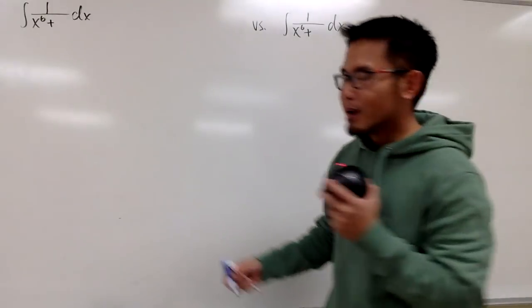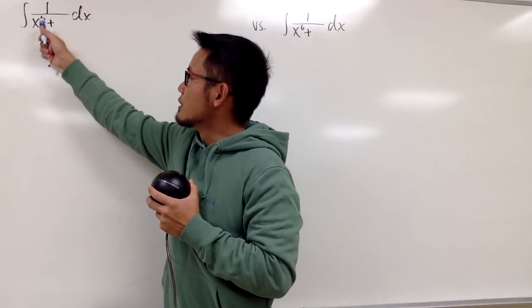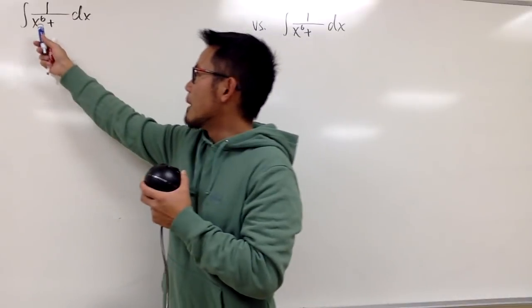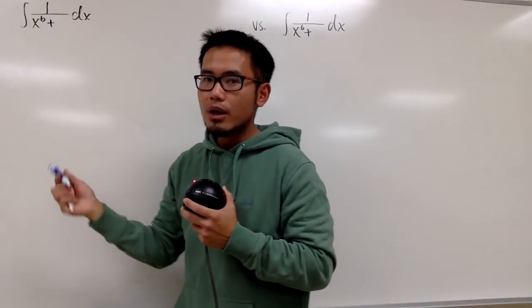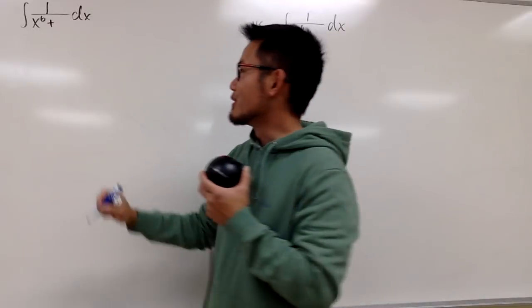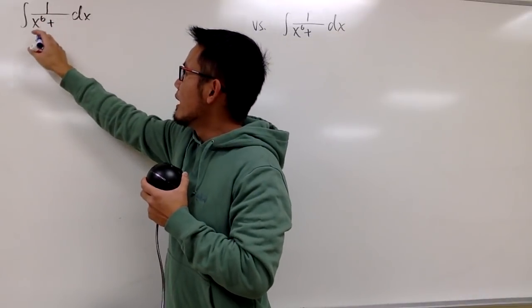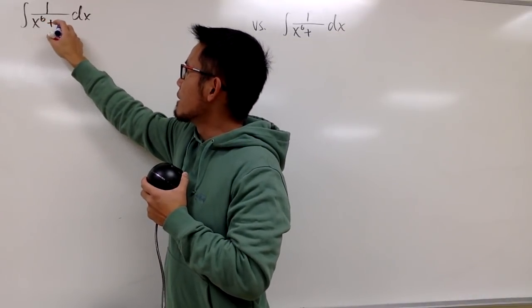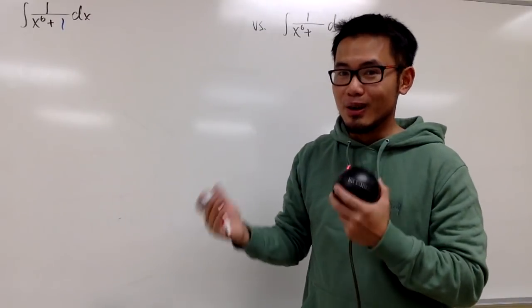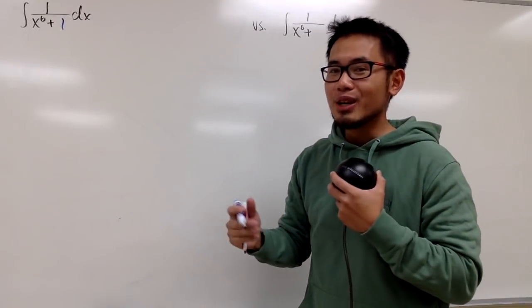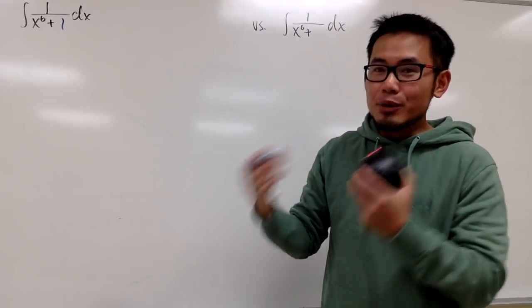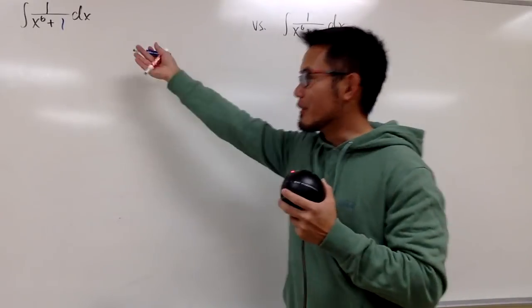Okay, now we have 1 over x to the 6th power plus something. This is a power function, x to the 6th power. If you want to integrate 1 over x to the 6th power plus 1, this right here is going to be really, really long, because you have to do a very hardcore and marathon-style partial fraction for that.